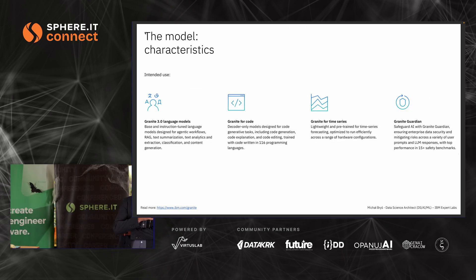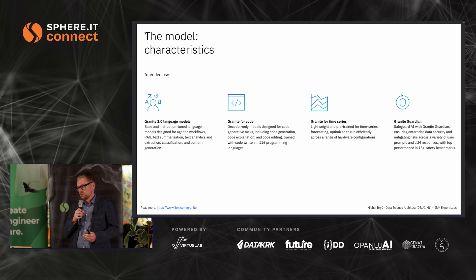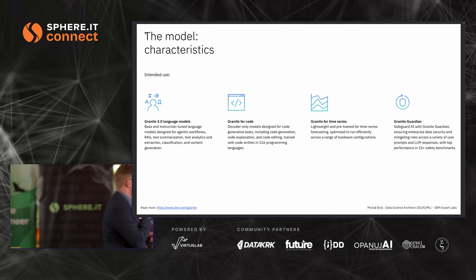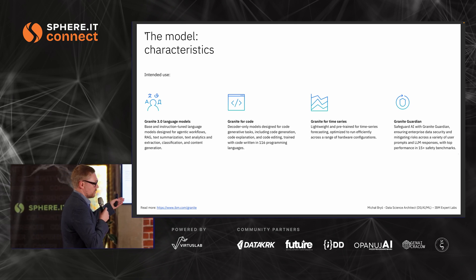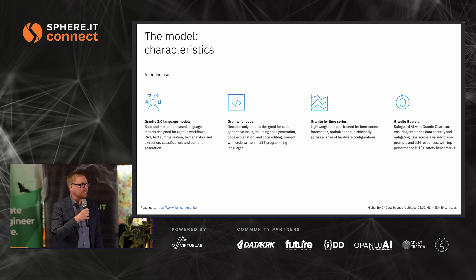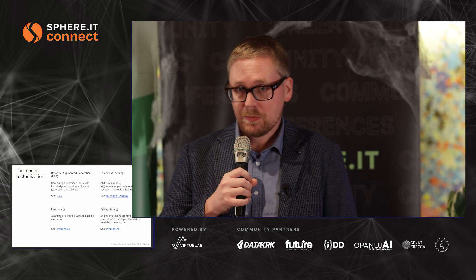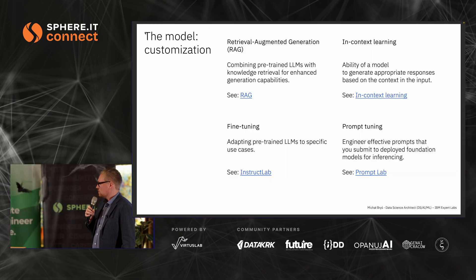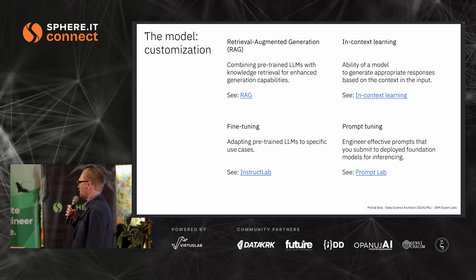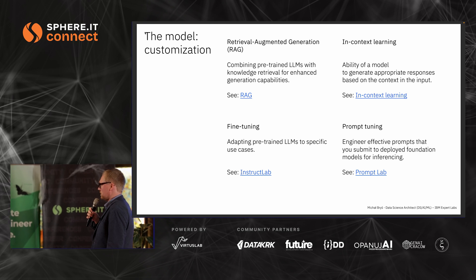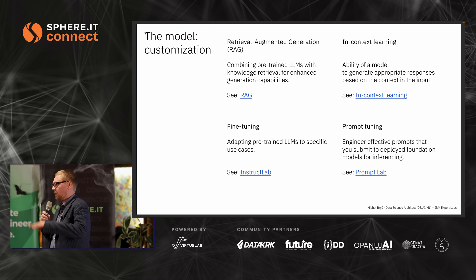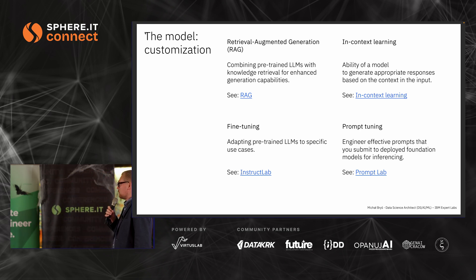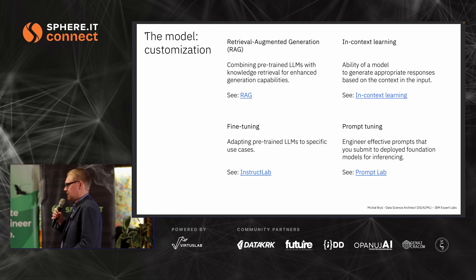Another thing is the intended use of the model. We have generic, general-purpose foundation models, but also models fine-tuned for specific tasks — for example, Granite for code generation, even for time series processing, and even models with built-in security checks. For customization, to differentiate and create your own application, you'll want to customize the model output. The first approach, well-known in this room, is retrieval-augmented generation: connect an external source of knowledge to the model, calculate the embeddings, use those embeddings to create a better prompt, fill the model's knowledge, and get the right results.